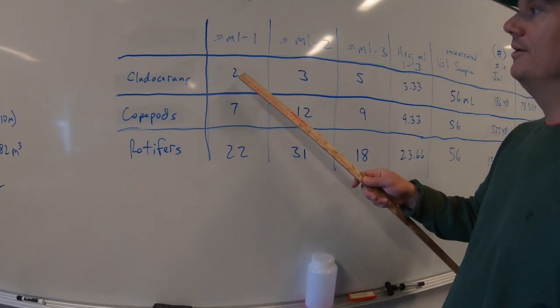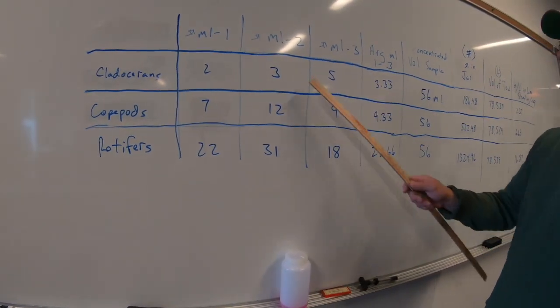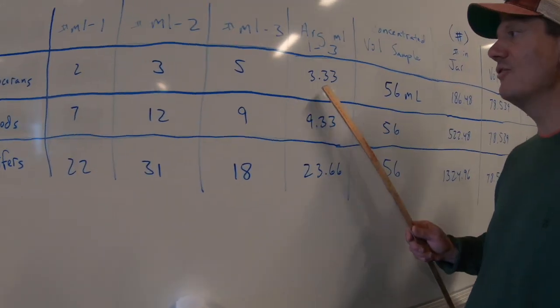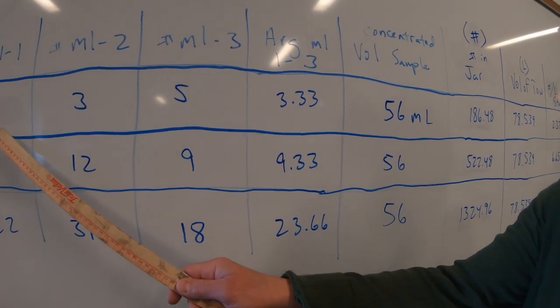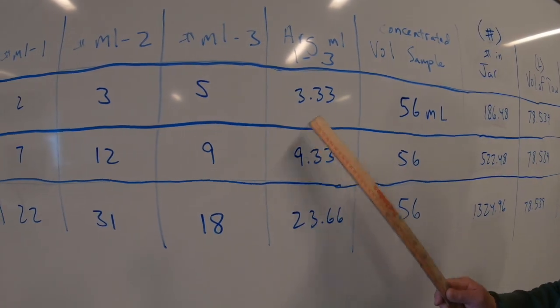So again, mill 1, mill 2, mill 3, this is what we found. And here's the average number per mill. So average these three numbers here, you come up 3.3 cladocerans or water fleas.